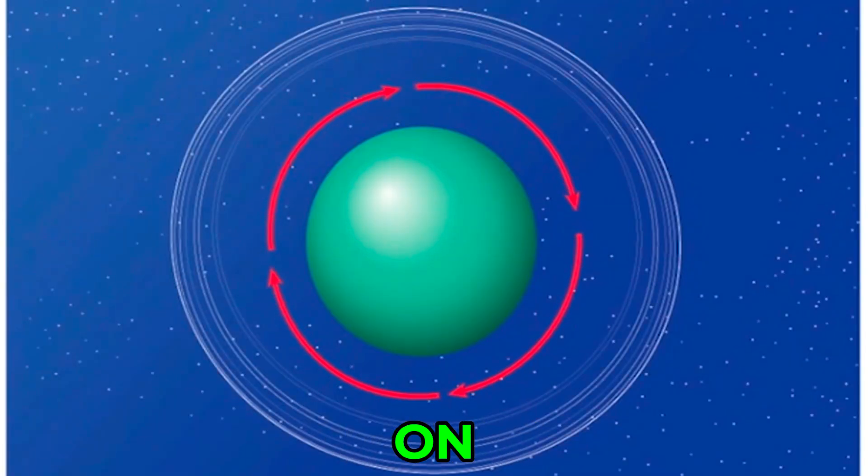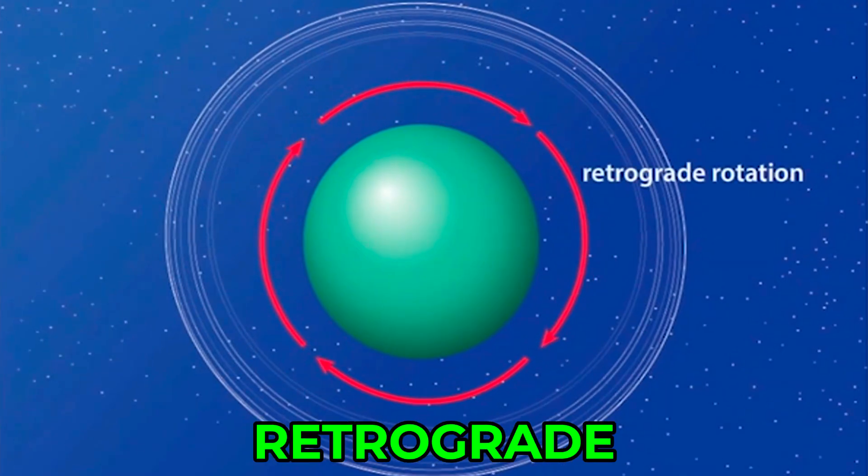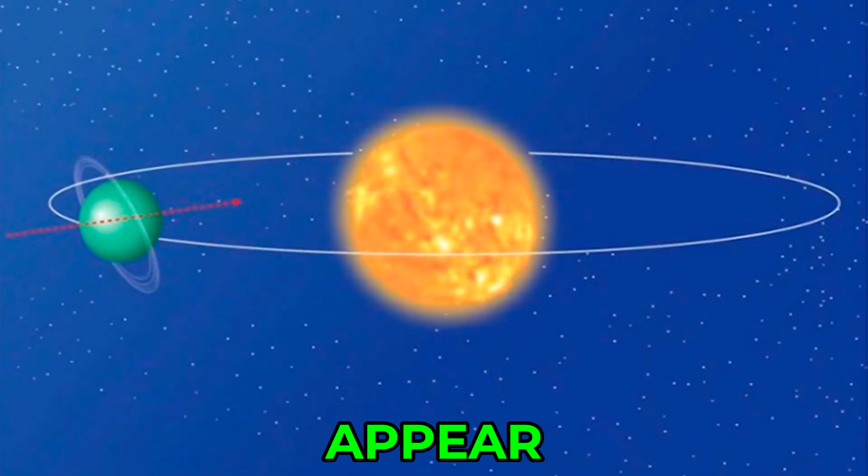Uranus spins on its axis in a clockwise direction called retrograde rotation. It also has a rotation axis that is tilted almost parallel to its orbital plane. This makes it appear that Uranus is rotating on its side.